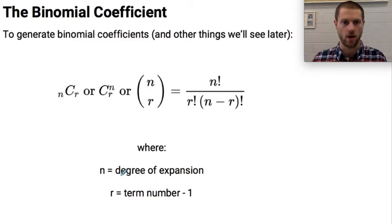Where n is equal to the degree of the expansion and r is the term number minus one.